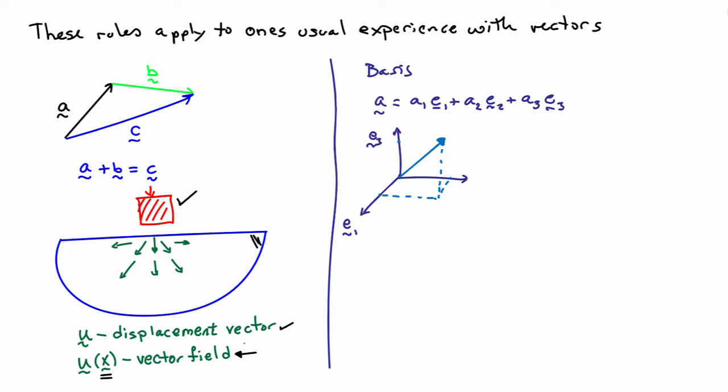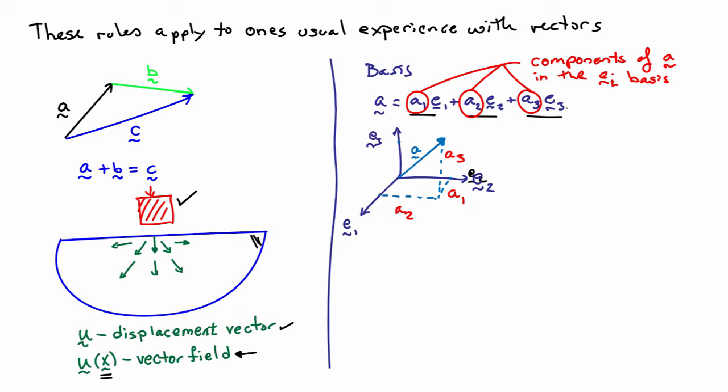One very important thing about vectors is that we usually write them with respect to a basis. If I have a basis e1, e2, e3, then I can decompose the vector into that basis as a1 e1 + a2 e2 + a3 e3. The coefficients a1, a2, and a3 are called the components of a in the ei basis — they are just the projections of a onto the axes or directions defined by the unit vectors e1, e2, and e3.